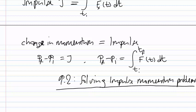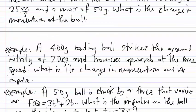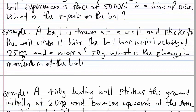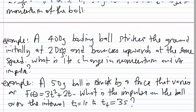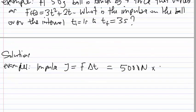Let's solve some examples. For the first one, you are calculating impulse given force and time. Impulse equals F times ΔT — it's just force times time, the area under the graph. If the force is constant, you multiply force by the time interval. So 5,000 newtons multiplied by 0.5 seconds gives 2,500 N·s.